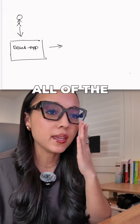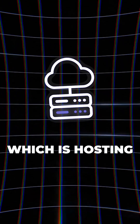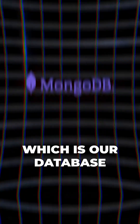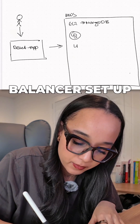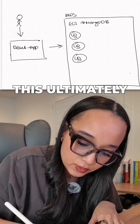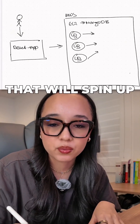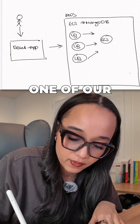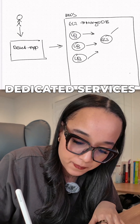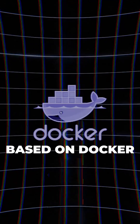I won't get into all of the AWS intricacies because I am still learning, but ultimately we have an EC2 instance hosting our MongoDB database. Then we have a load balancer set up for different services, which is controlled by an ECS instance that spins up respective tasks. Each task is one of our dedicated services, and each dedicated service knows what to run based on Docker.